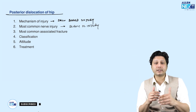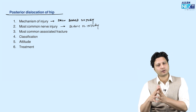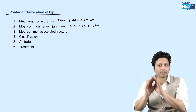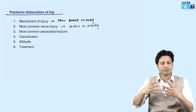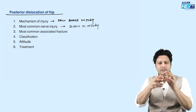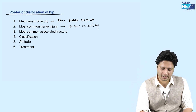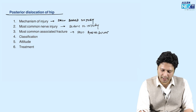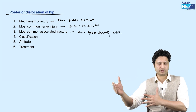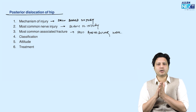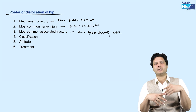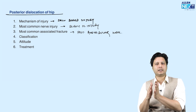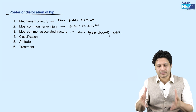The most common associated fracture is the posterior acetabular wall fracture. When the head of the femur is dislocated posteriorly, it may first break the posterior wall of the acetabulum. Depending on the type of injury, there could also be injury to the head or neck of femur, or to the roof or floor of the acetabulum — but the most common associated fracture with posterior dislocation is the posterior acetabular wall.